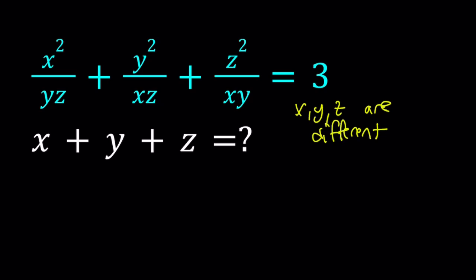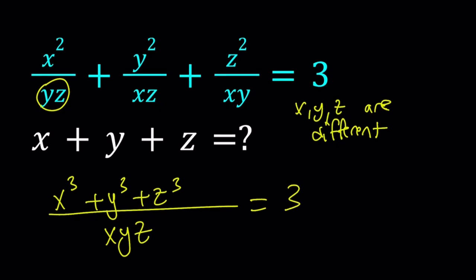Let's make a common denominator. I'm going to multiply this by x so that gives me x cubed and then y cubed and then z cubed. I'm going to divide all of that by the common denominator xyz and set it equal to 3. Great.